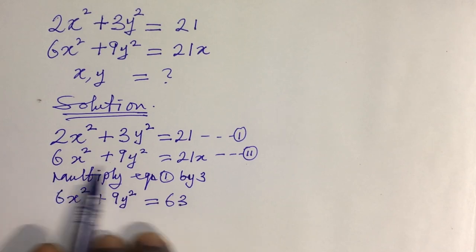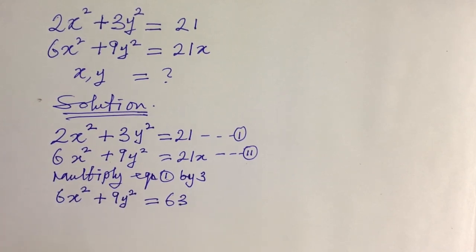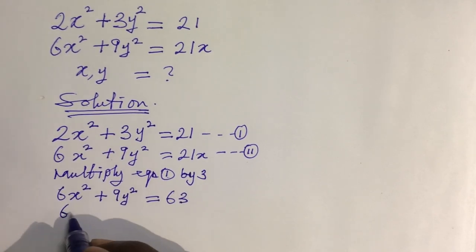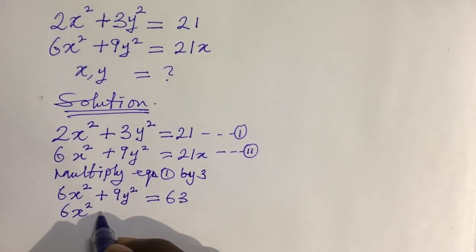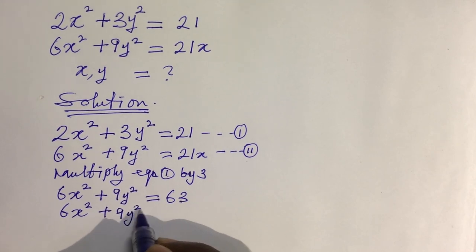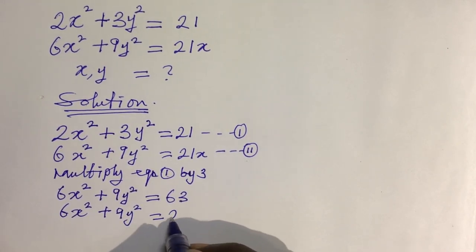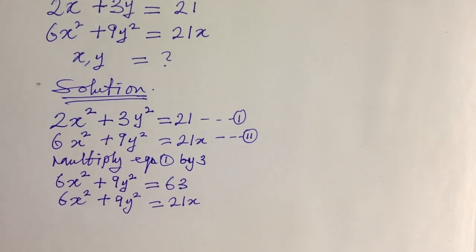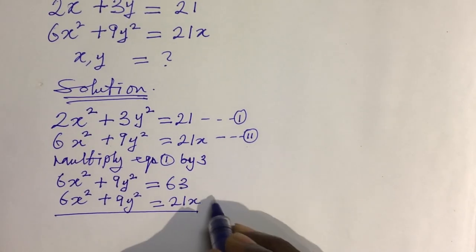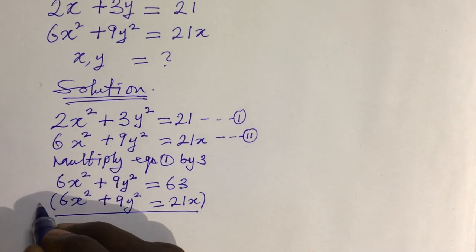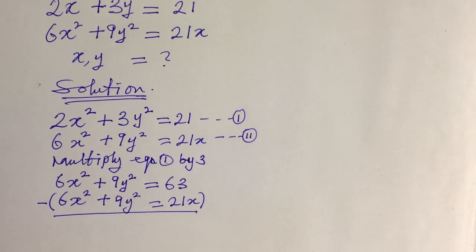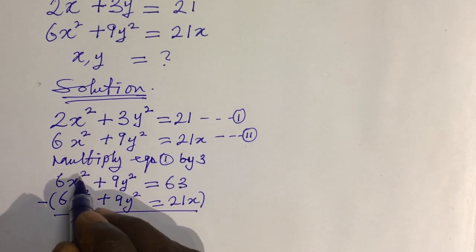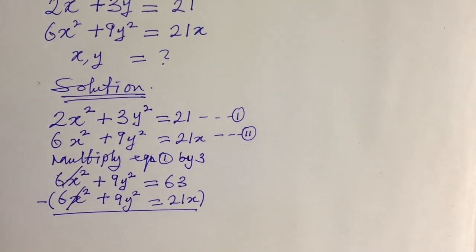We can say multiply Equation 2 by 1, which still gives the same thing: 6x² + 9y² = 21x. At this point we subtract Equation 1 from Equation 2. So 6x² − 6x² gives zero.